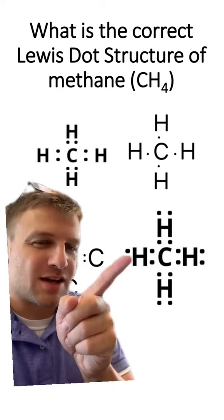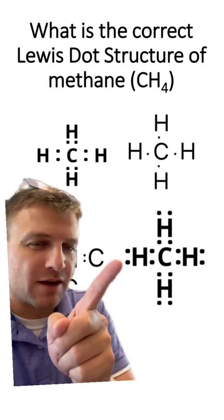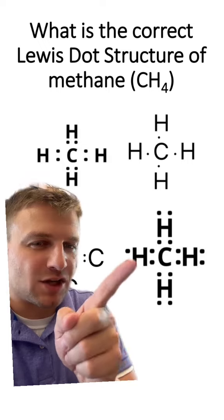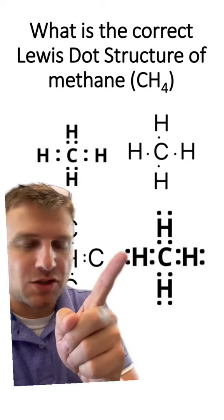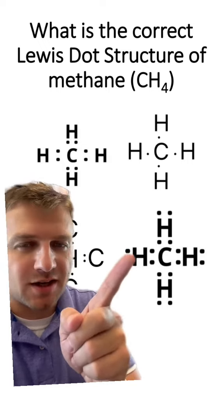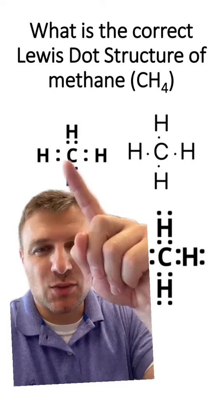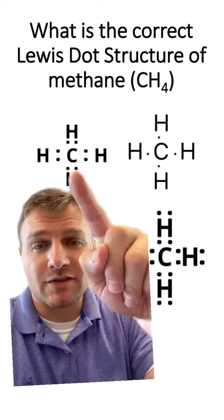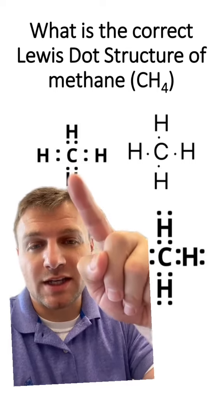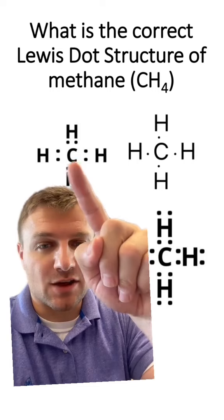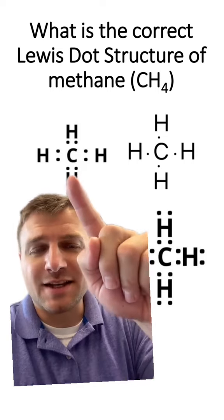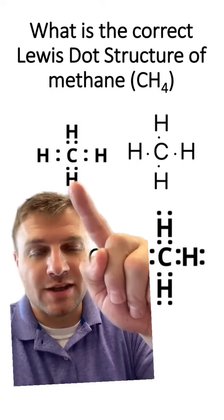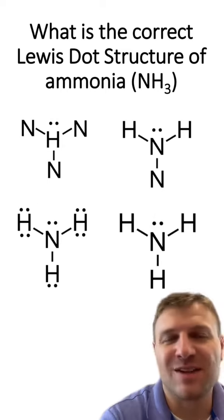This one's not correct because there are no lone pairs of non-bonding electrons for hydrogen — there would just be too many electrons here. So we know this one's correct, and it is correct. There are two bonding pairs of electrons between each hydrogen and the carbon, because these electrons are shared between the carbon and the hydrogen, forming a covalent bond.